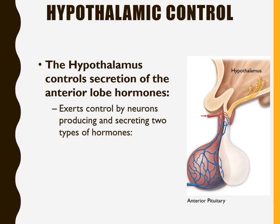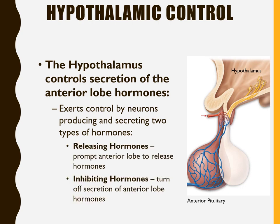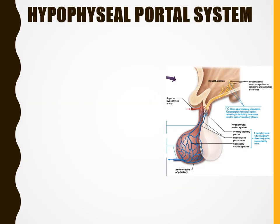The anterior pituitary gland is under direct control of the hypothalamus. Neurons within the hypothalamus produce and secrete two types of hormones affecting the pituitary: releasing hormones, which prompt the anterior lobe to release its hormones, and inhibiting hormones, which turn off secretion. So rather than a pure feedback system, there's direct control from the hypothalamus over the anterior pituitary.